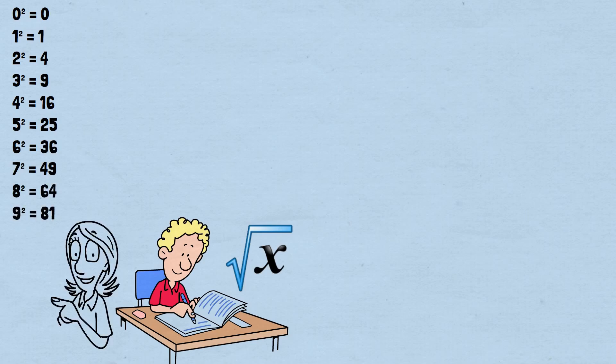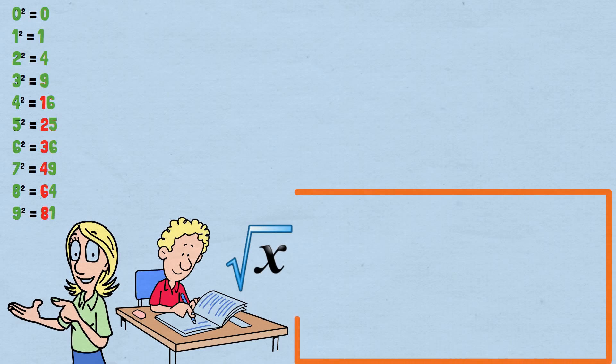You've seen this table countless times, but here's what nobody taught you to notice. Look at the last digit of each square. Zero squared ends in zero. One squared and nine squared end in one. Two squared and eight squared end in four. Three squared and seven squared end in nine. Four squared and six squared end in six. Five squared ends in five. Now comes the revelation that changes everything.